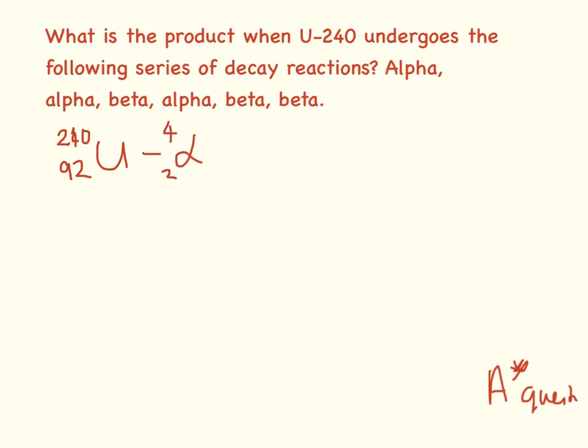240 minus 4, 236, 90. 90 on the periodic table is thorium.